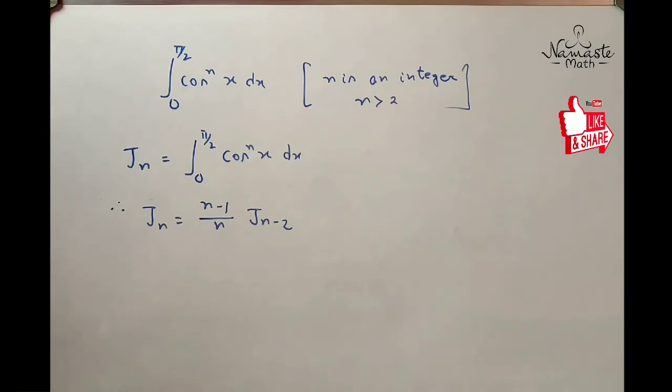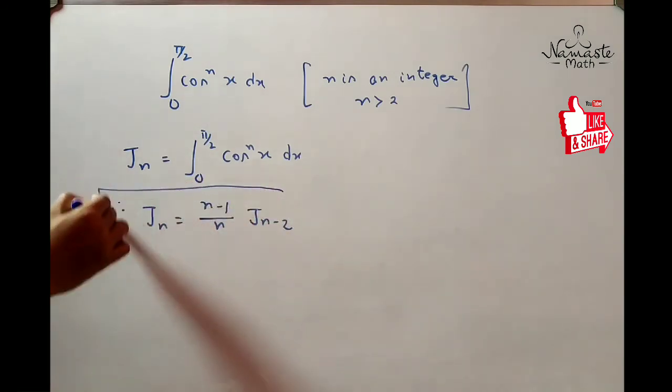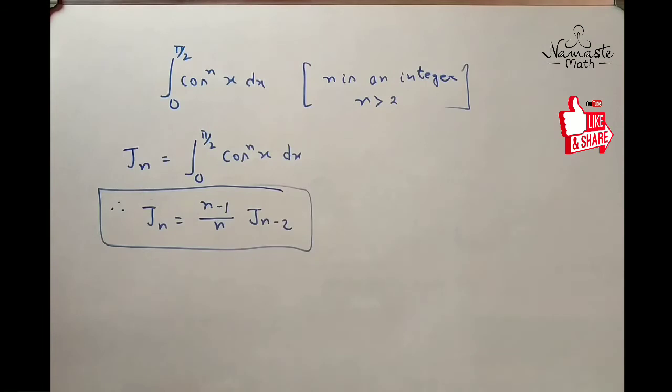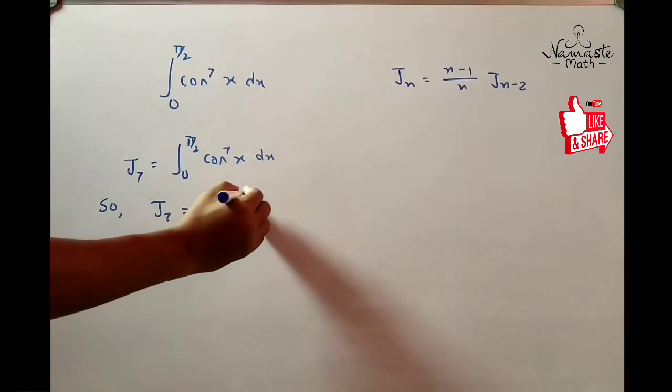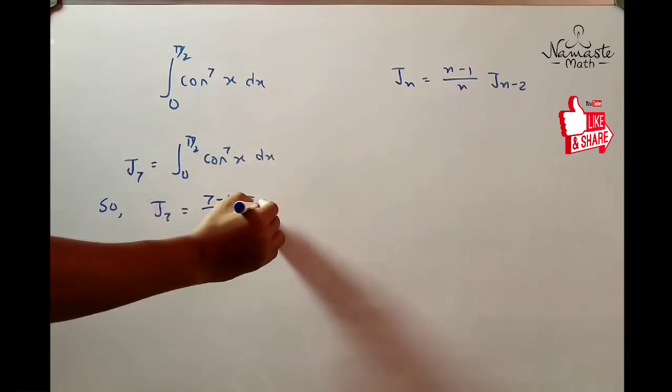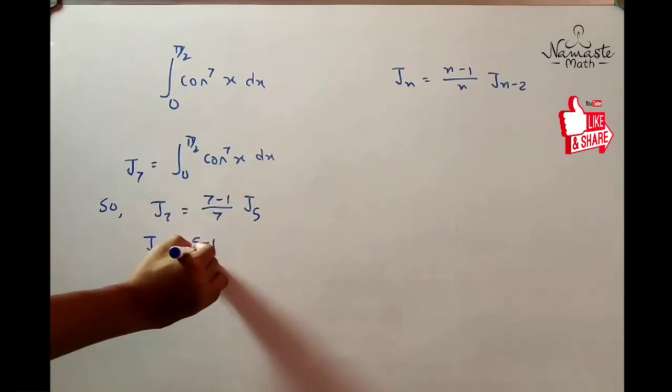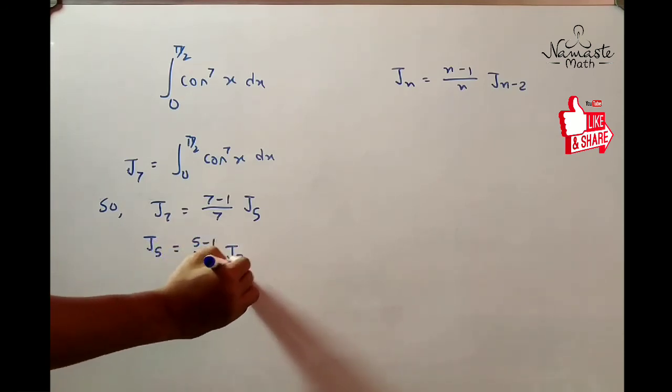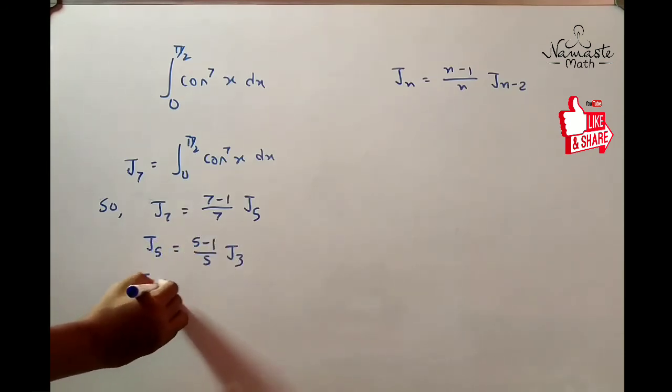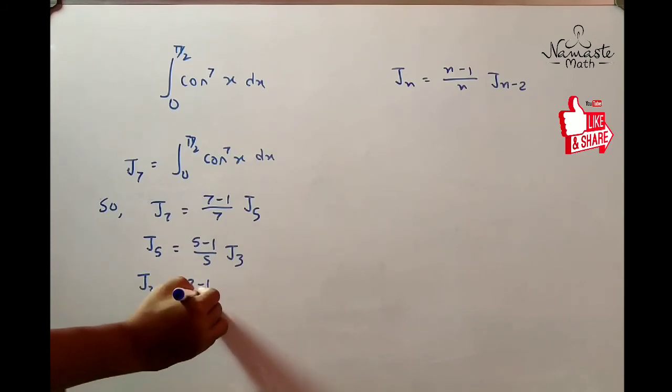For the cos function, a similar approach is done. All conditions remain the same as for sin: n must be an integer and n must be greater than 2. The formula is Jn = (n-1)/n times J(n-2). To understand better, we have a problem: integral 0 to π/2 of cos^7 x dx, and the formula is on the right side of the board.